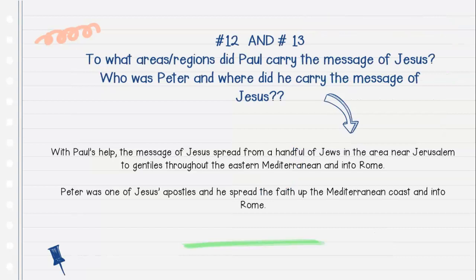Questions number twelve and thirteen: To what areas or regions did Paul carry the message of Jesus? Who was Peter, and where did he carry the message of Jesus? With Paul's help, the message of Jesus spread from a handful of Jews in the area near Jerusalem to Gentiles throughout the eastern Mediterranean and into Rome. And Peter was one of Jesus' apostles, and he spread the faith off the Mediterranean coast and into Rome.